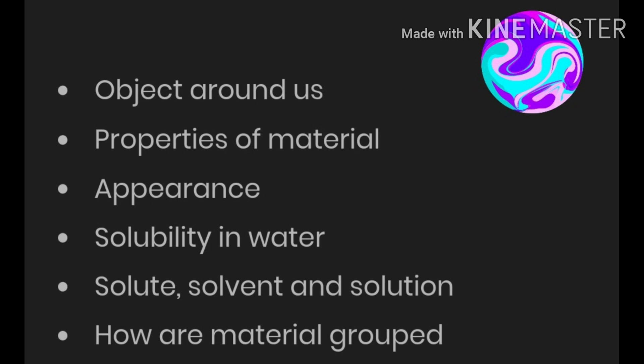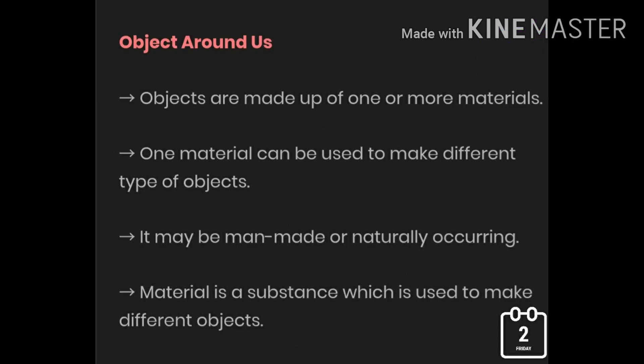Objects around us can be classified based on their properties such as appearance and their tendency of solubility in water. For this we need to understand what a solute, solvent, and solution are. Objects are made up of one or more materials. Materials are substances used to make different types of objects, and one object can be made up of the same or different kinds of material. These materials can be man-made or naturally occurring.